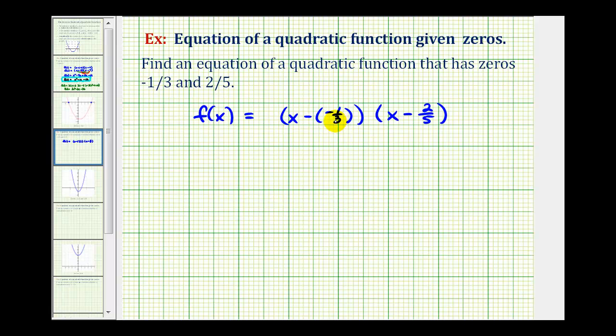Let's go ahead and simplify this first factor. Remember, this would be the same as x plus one-third. Remember, subtracting a negative is the same as adding a positive. The second factor would be still x minus two-fifths.